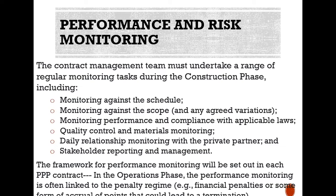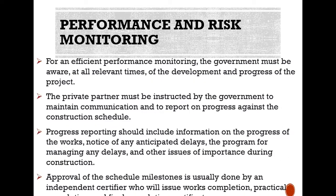The framework for performance monitoring will be set out in each PPP contract. In the operations phase, performance monitoring is often linked to the penalty regime — for example, financial penalties or some form of accrual of points that could lead to termination. For efficient performance monitoring, the government must be aware at all relevant times of the development and progress of the project. The private partner must be instructed to maintain communication and report on progress against the construction schedule. Progress reporting should include information on the progress of works, notice of any anticipated delays, the program for managing any delays, and other issues of importance during construction.